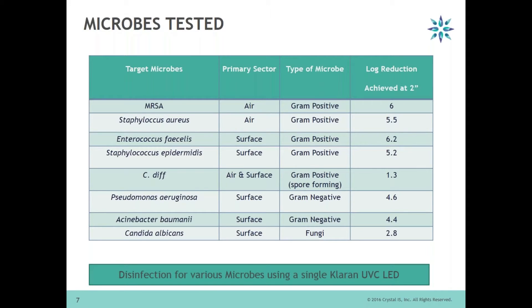We are also creating our own testing. What we show here is we took one of our Clarion UV-C LEDs, typically a 20 milliwatt LED, and we selected different microbes. Here are the list of microbes, there are different primary sectors where they can be used. For example, MRSA, the primary sector would be air. What type of a microbe it is, and what kind of a log reduction did we achieve?